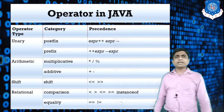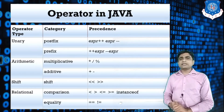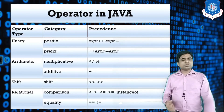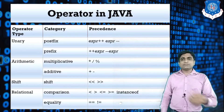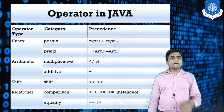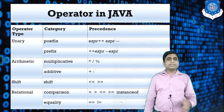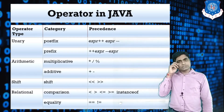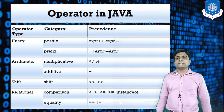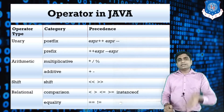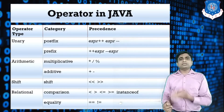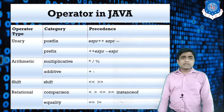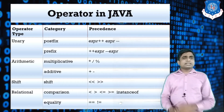The next operator is the arithmetic operator. You can use all arithmetic functions with this operator: addition, multiplication, division, subtraction, and modulo. The modulo function calculates the remainder when you divide two numbers.